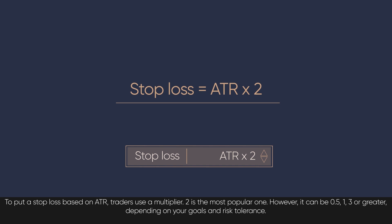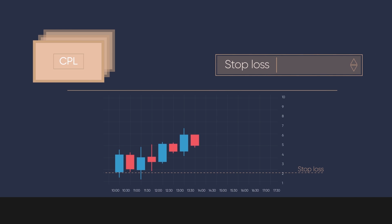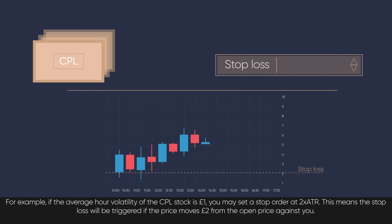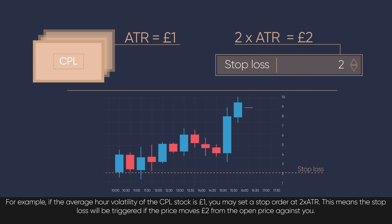Two is the most popular multiplier. However, it can be 0.5, 1, 3, or greater depending on your goals and risk tolerance. For example, if the average hourly volatility of the CPL stock is £1, you may set a stop order at 2 times ATR. This means the stop loss will be triggered if the price moves £2 from the open price against you.